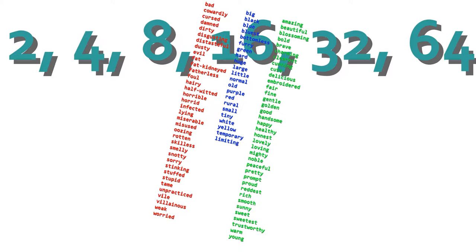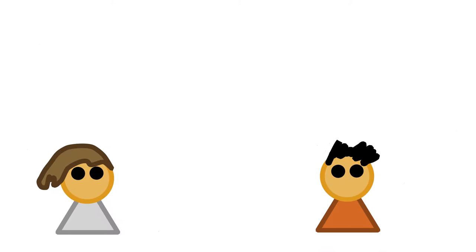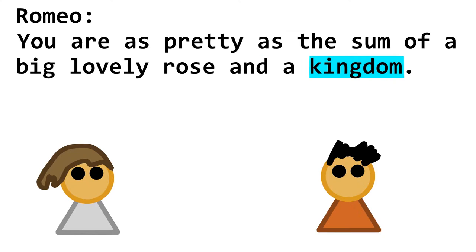Go away, Clippet! Now, you might notice that this only gets you to powers of two, so you will need to do at the very least addition and subtraction. Math operations can be done by saying 'you are the sum of,' 'you are the product of,' 'you are the quotient of,' or 'you are the difference between,' followed by the two values. If Romeo tells Juliet 'you are as pretty as the sum of a big lovely rose in a kingdom,' Juliet will be the sum of four and one, or five.